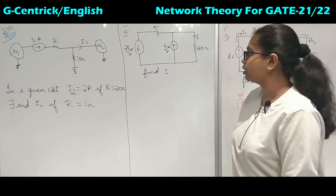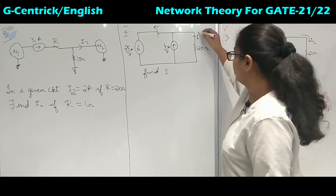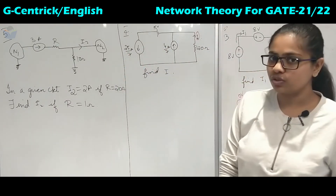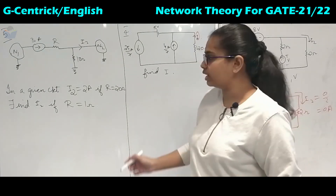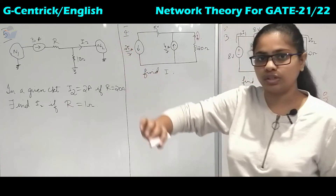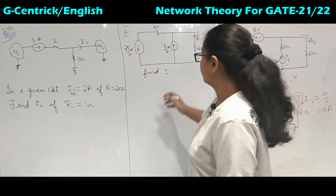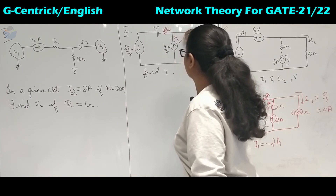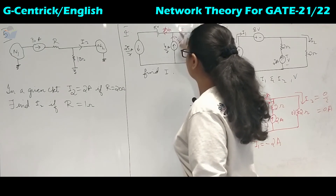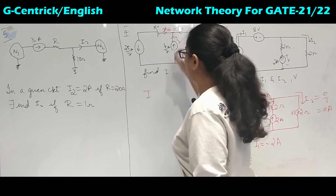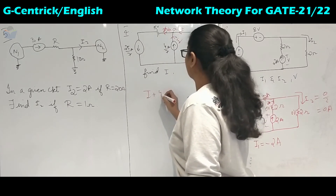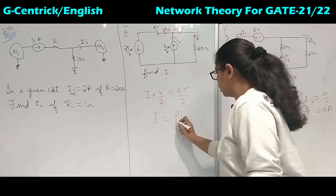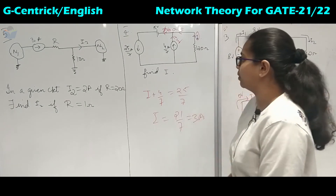Coming to question number 4, they have asked us to find the value of I. When a current source and a voltage source are given together, the current source is the dominant one — current source rules the voltage source. Here it is 25/7 amperes and 4/7 amperes. Applying KCL at node A: I plus 4/7 equals 25/7, so I equals 21/7, that is 3 amperes.